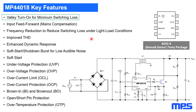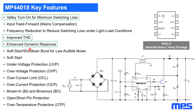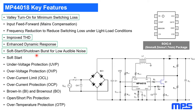Some additional features these parts have include valley turn-on for minimum switching losses — we wait for the voltage to be the lowest possible before turning on the main switch. There's also improved THD mainly for low power cases especially when running DCM, enhanced dynamic response, and burst mode for very low power.